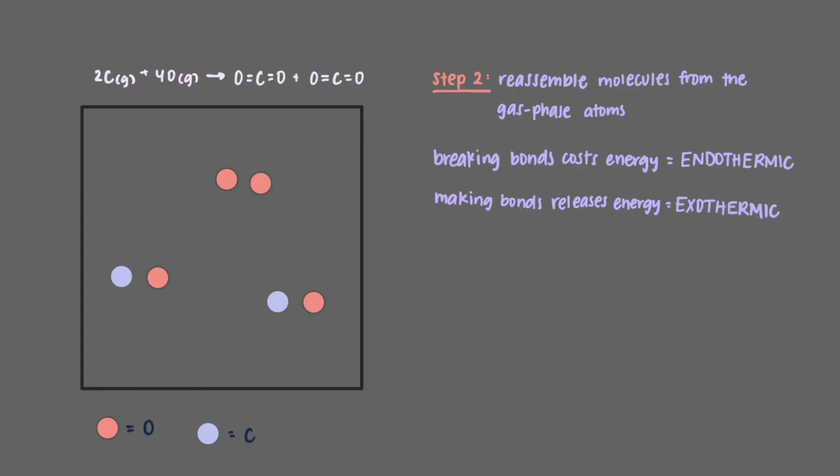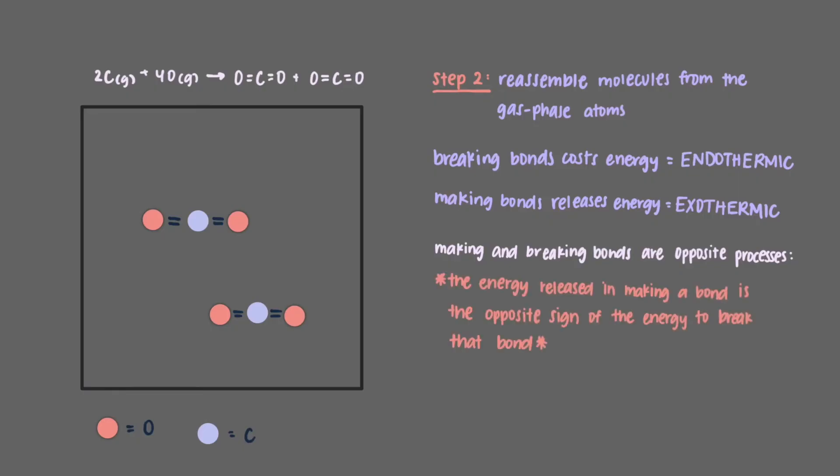In step 2 of the reaction, we are making 4 carbon-oxygen double bonds. If you try to look up a table of the energy released in the making of bonds, you won't find the table. That's because making and breaking bonds are opposite processes, and so the energy released in making a bond is the opposite sign of the energy to break that bond, the bond enthalpy.